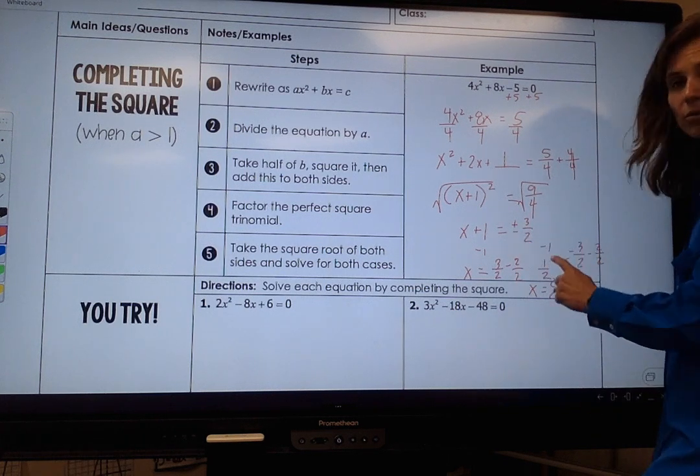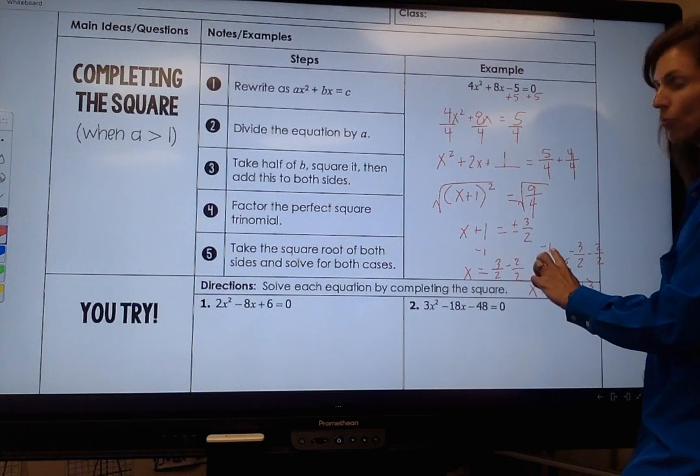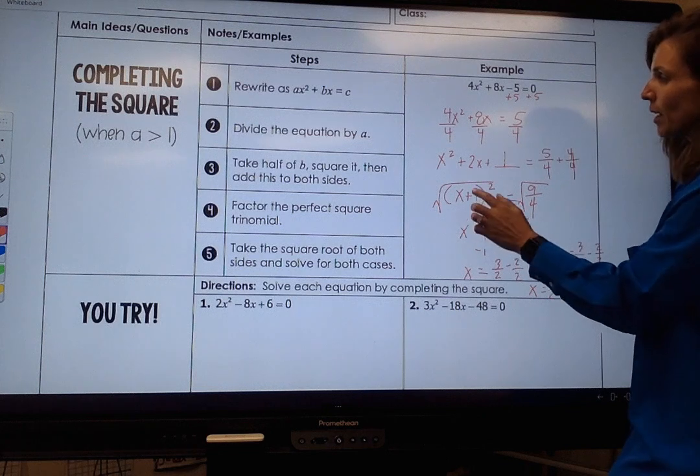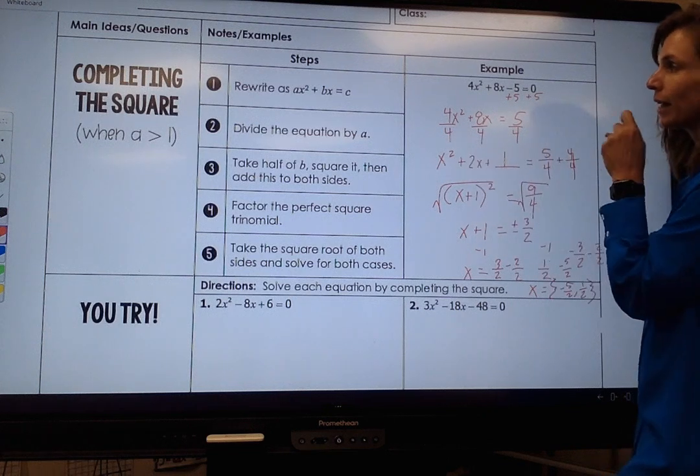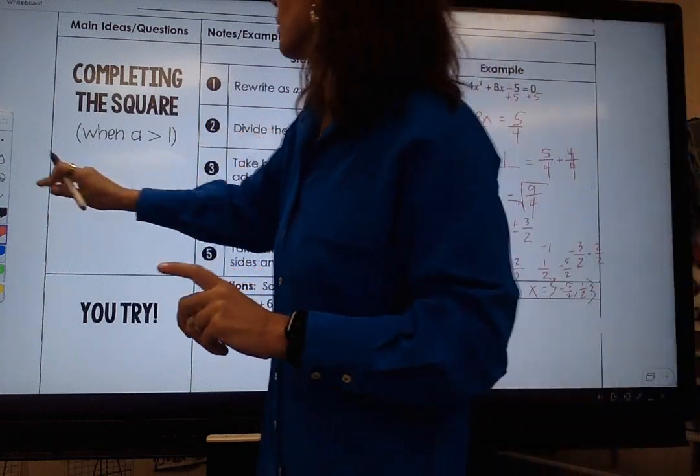Okay, so it's the same thing. It's plus or minus 3 halves and then we're subtracting 1. I originally added 1. Don't do what I did. So it's the same thing. The only thing new is we're dividing out that first term. So let's do a couple of examples together.